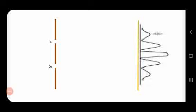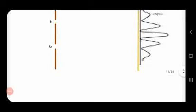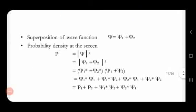Each particle is represented by a wave function ψ. If S1 is open, let the wave function of the particle reaching the screen be ψ1. If S2 is open, let the wave function be ψ2. So if both S1 and S2 are open, the total wave function of the particle reaching the screen will be the linear combination: ψ = ψ1 + ψ2.